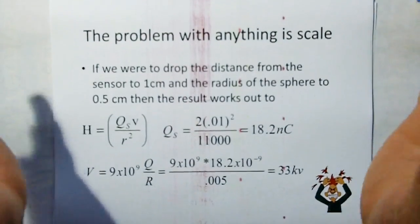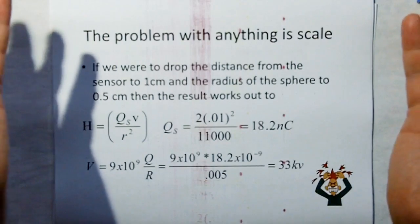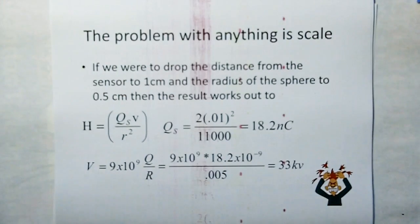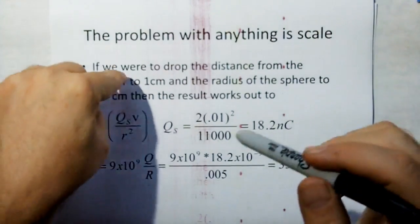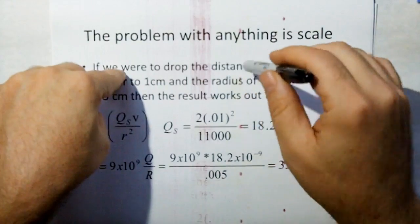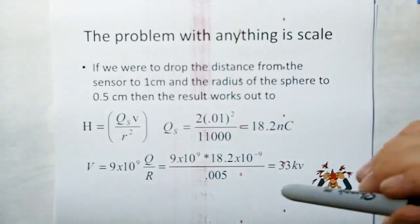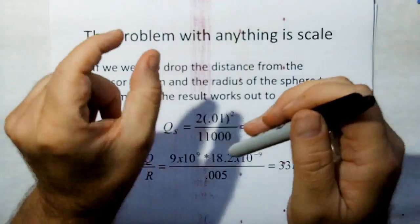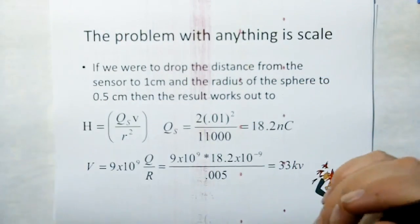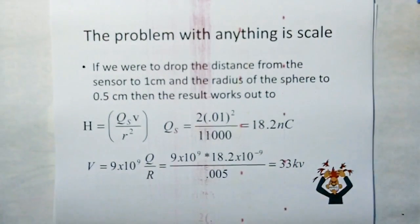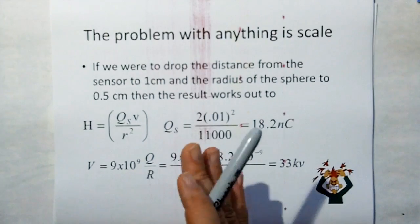So the problem with anything in science and engineering is usually scale. If we were to drop the distance between the sphere and the sensor from one meter to one centimeter, we have to make the sphere smaller, make the sphere half a centimeter. Well, that works out then. We only need 33 kilovolts. So we're getting better.